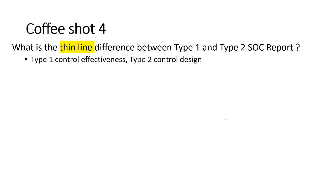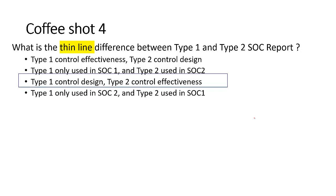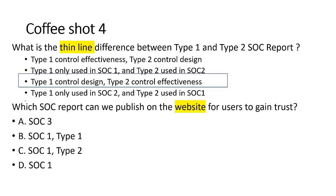Question 4: What is the difference between Type 1 and Type 2 SOC reports? Type 1 is control design; Type 2 is control effectiveness. It's not true that Type 1 is only used in SOC 1, or that Type 2 is only used in SOC 1. Both SOC 1 and SOC 2 have Type 1 and Type 2. Example: if a policy requires an 8-character password and we see it documented — that's a Type 1 audit. If we try to create a user with fewer than 8 characters to test effectiveness — that's Type 2. Answer: C.